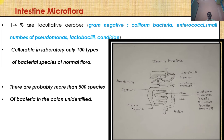If we culture fecal matter in the laboratory, only around 100 types of bacterial species of normal flora are culturable. We can isolate approximately 100 types of microorganisms from the intestinal tract. But there are probably more than 500 species of bacteria in the colon that remain unidentified and unculturable.